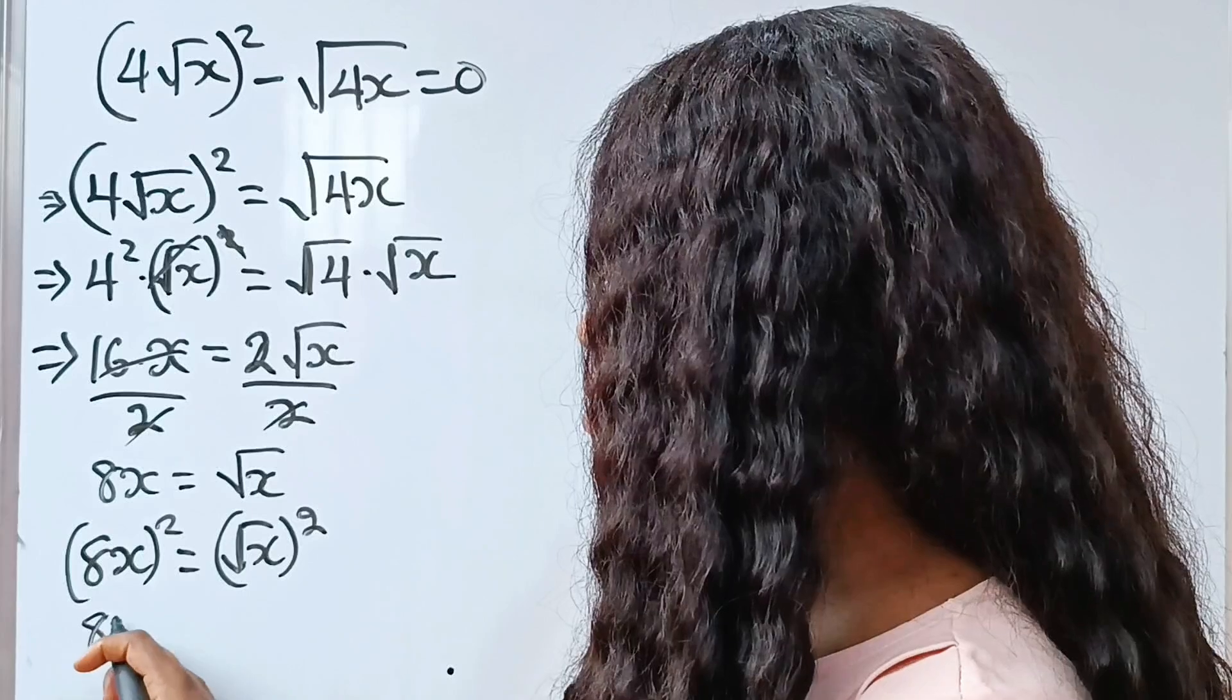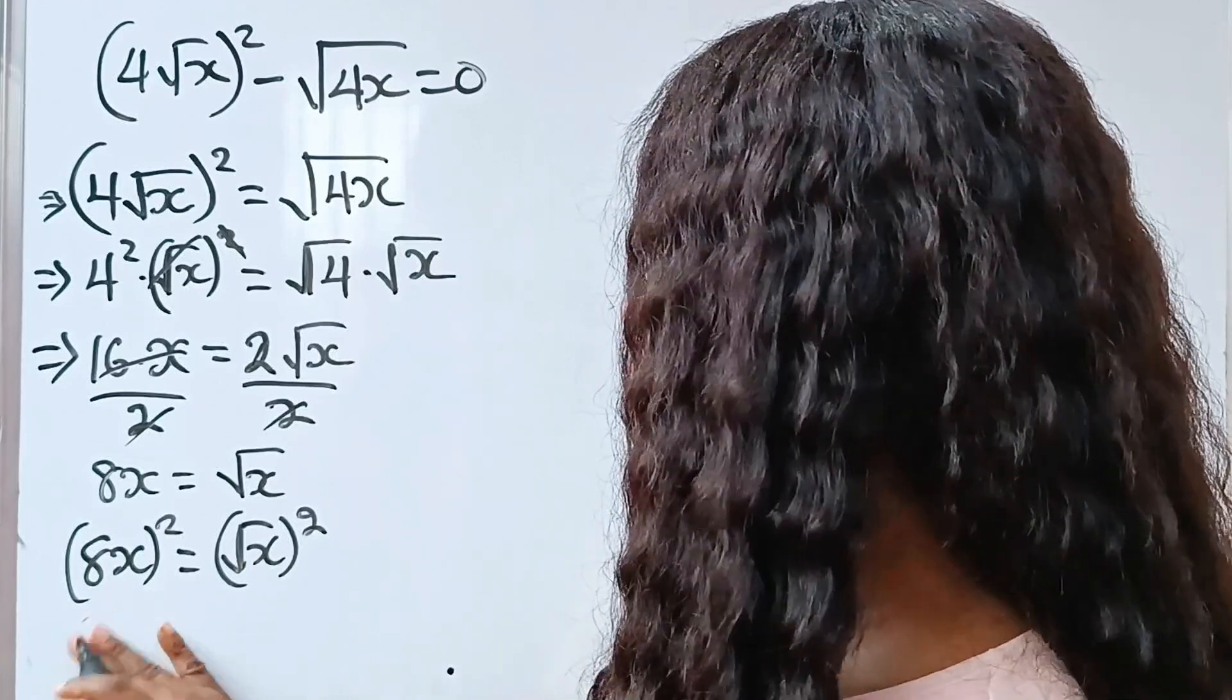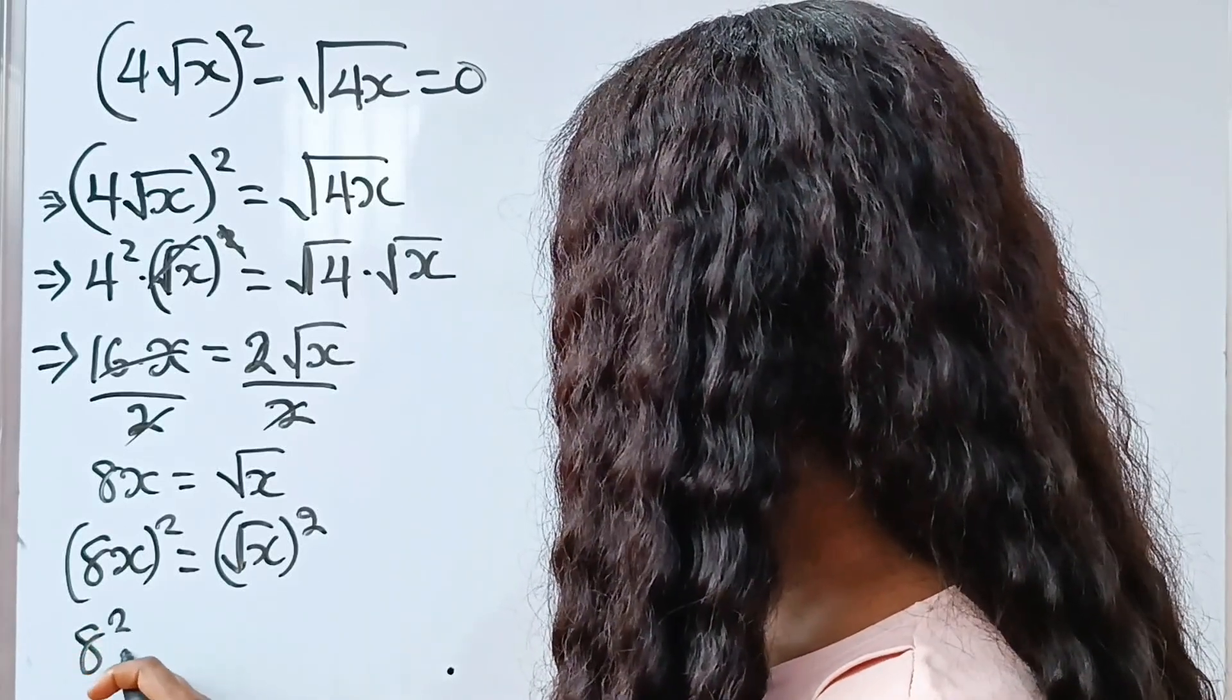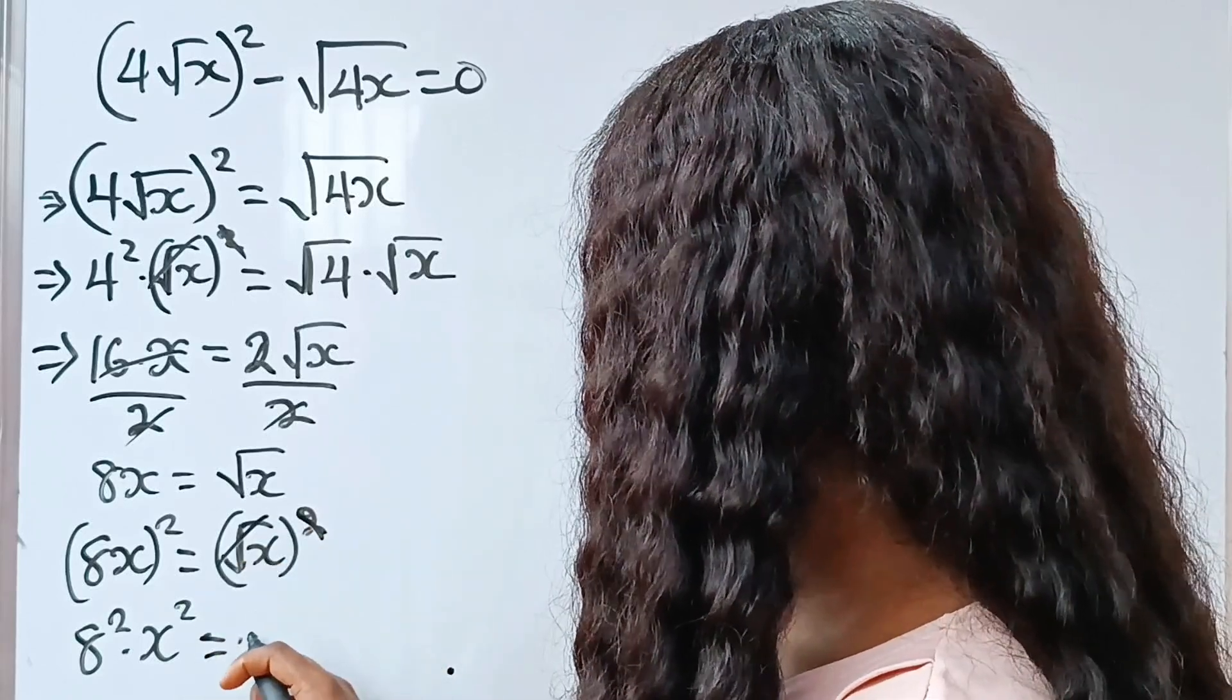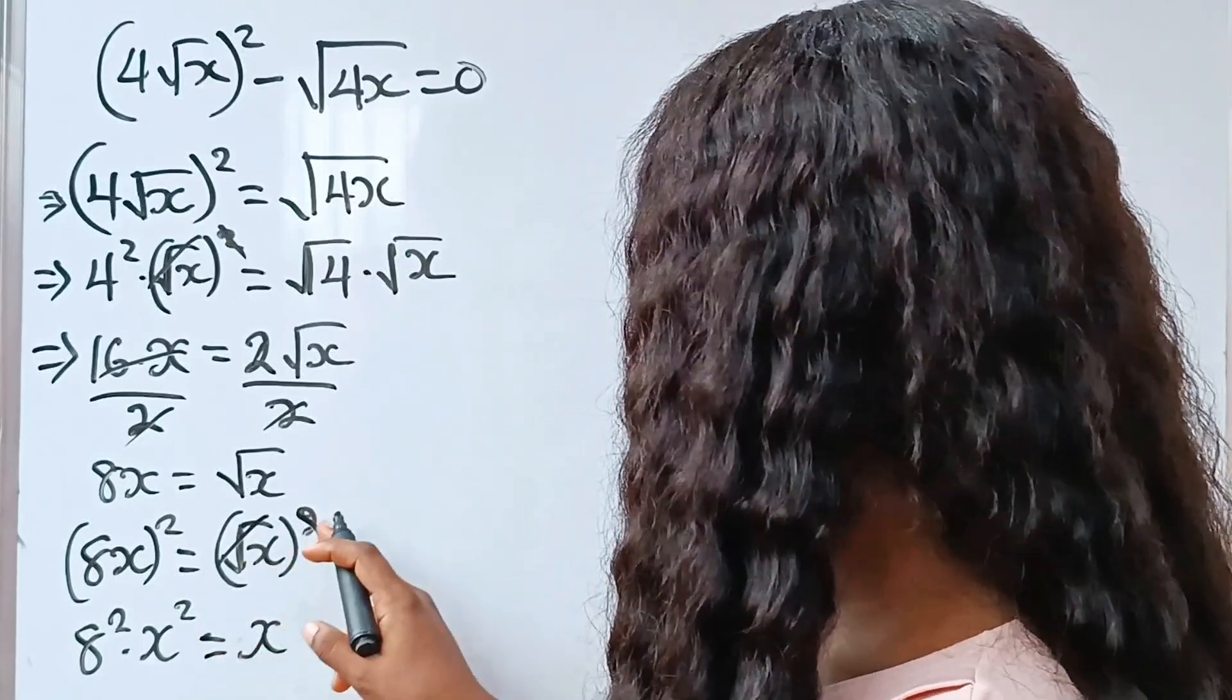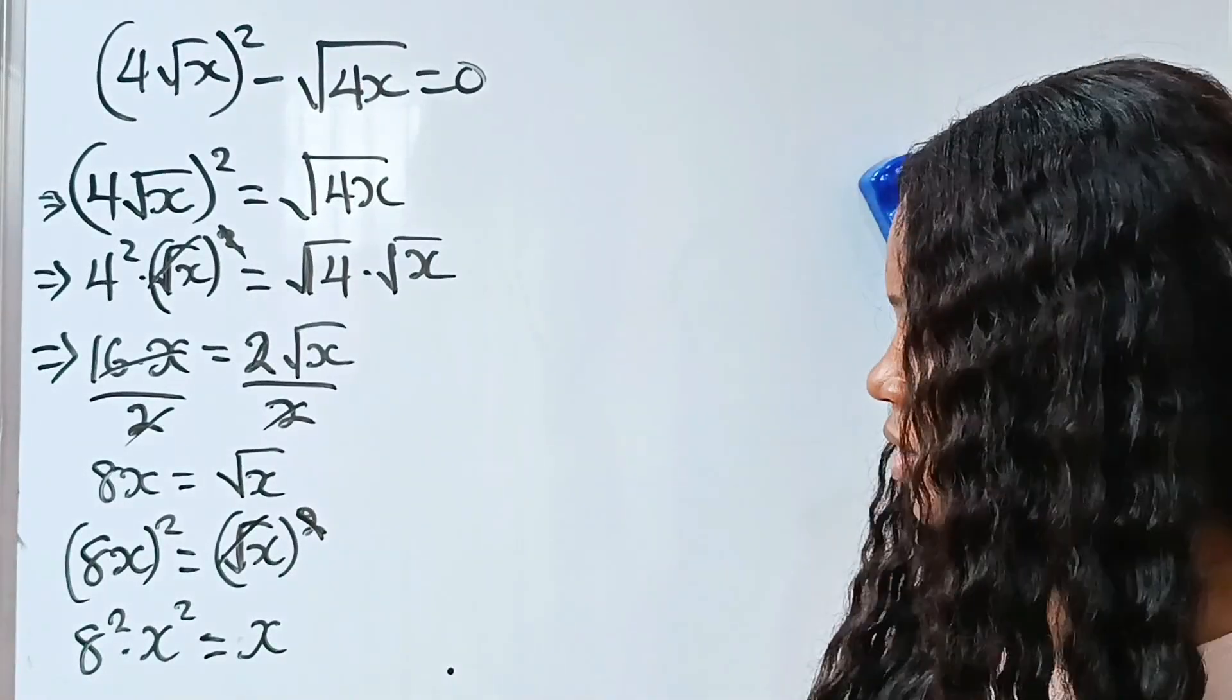Then this is the same thing as 8 squared multiplied by x squared. Is equal to, this we remove and we have x.